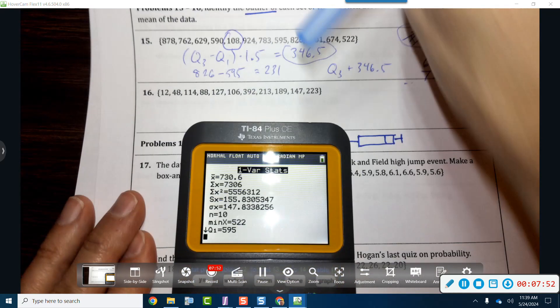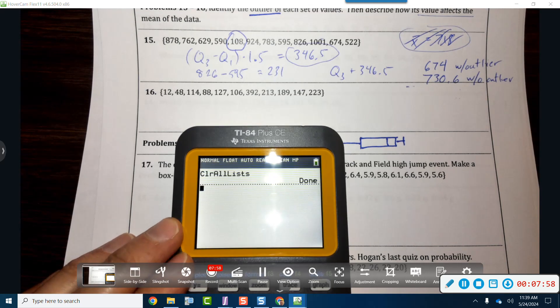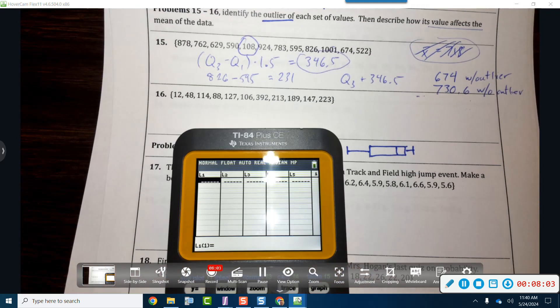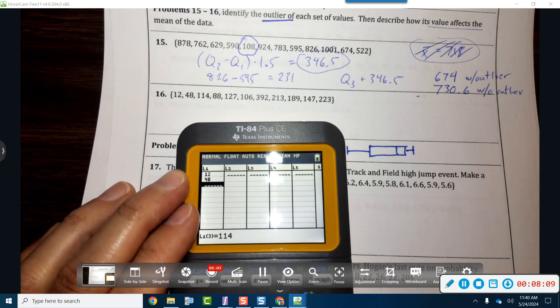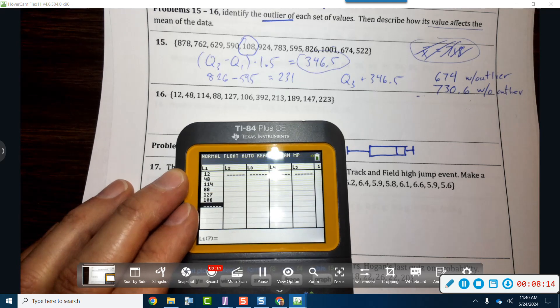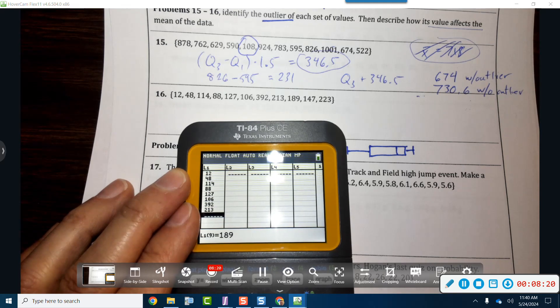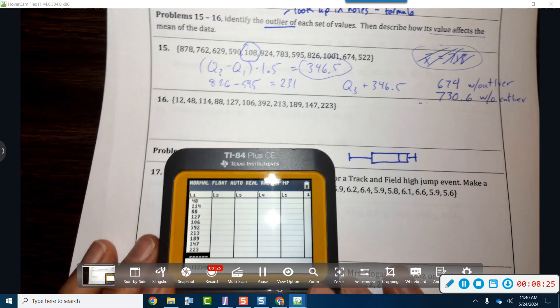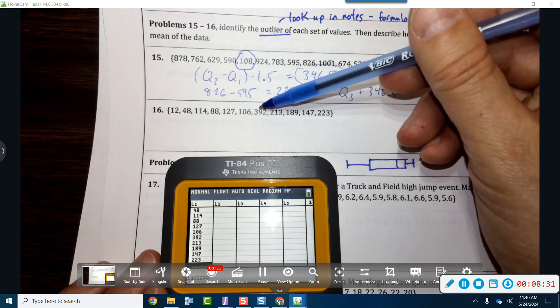We're going to do the same process with this guy. So let's go ahead and clear. Let's run through this list here. I'm going to edit this. We've got 12, kind of low, let's see if that's the outlier. 48, 114, 88, 127, 106, 392. That feels a little large.